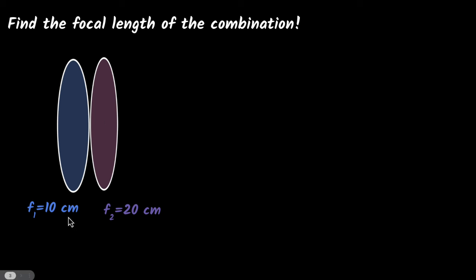Well, my first instinct is, if I know the focal length of this lens as 10 and this one as 20, I might think that the total focal length should be just f1 plus f2, which is 30 centimeters. So the total focal length of this lens system must be 30 centimeters. Just add them.